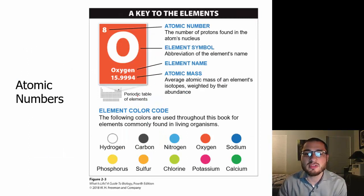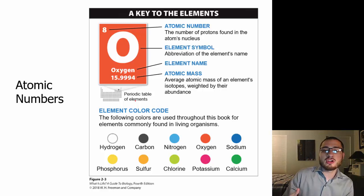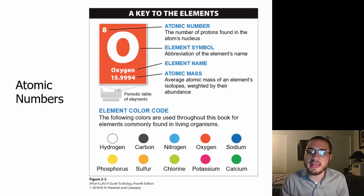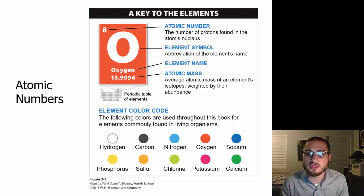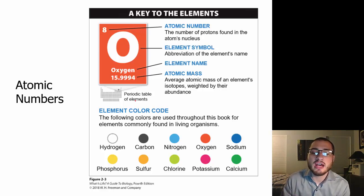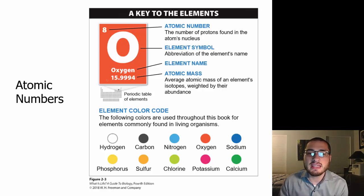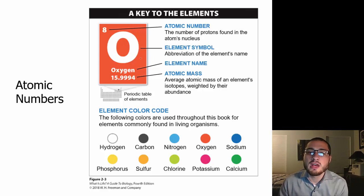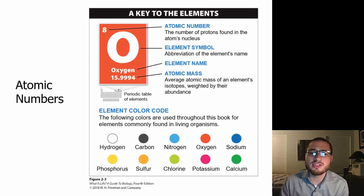When we look at the periodic table, it is really a way to organize all the different elements — to organize the different atoms we can find in different molecules and substances. We organize them into different categories based on their composition and mass. Each element has an element symbol. Instead of writing out the full name, we assign it a symbol: oxygen is O, hydrogen is H, carbon is C, and each one is assigned a certain symbol.